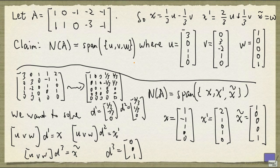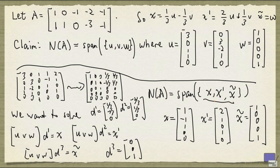And clearly, if this were not the case, one of the elements would be redundant in the description of N(A). The same is also true for this set x, x prime, and x tilde.